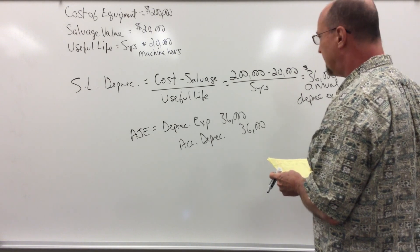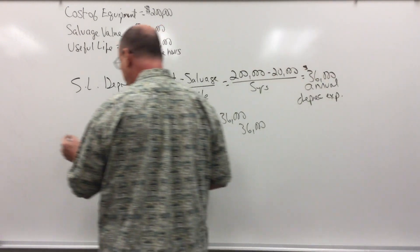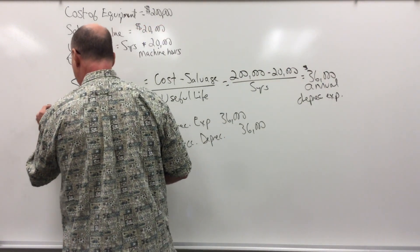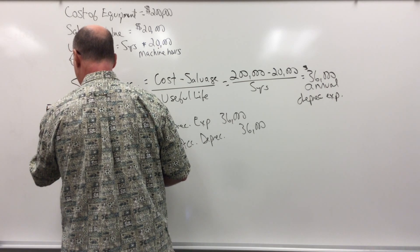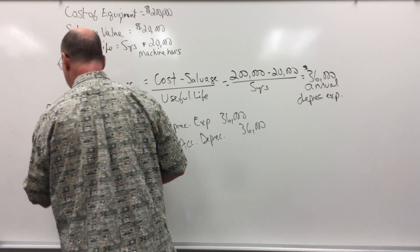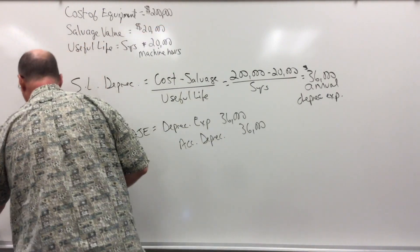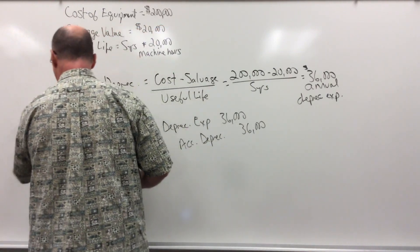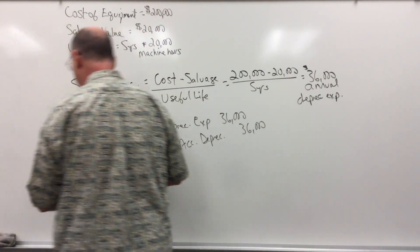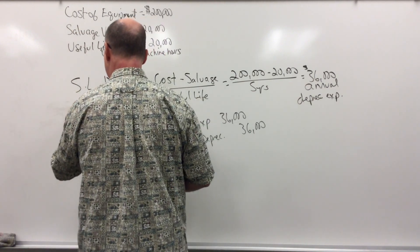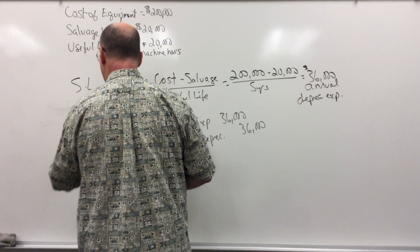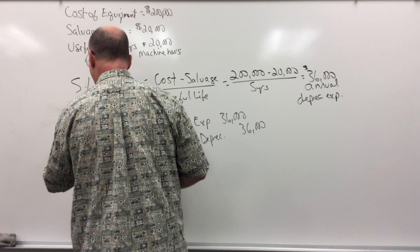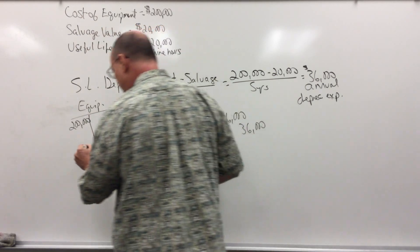Now I want to put a T account over here. The equipment account - the equipment T account really doesn't change that much. When we buy equipment, we simply debit it for the cost, and that's kind of what remains.